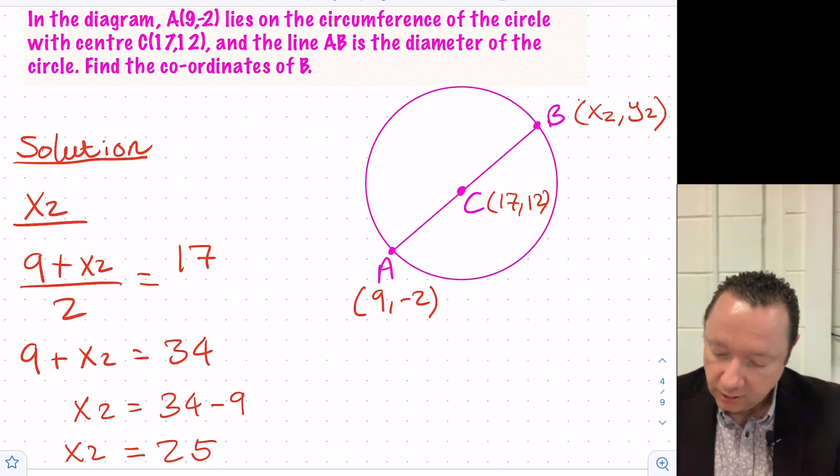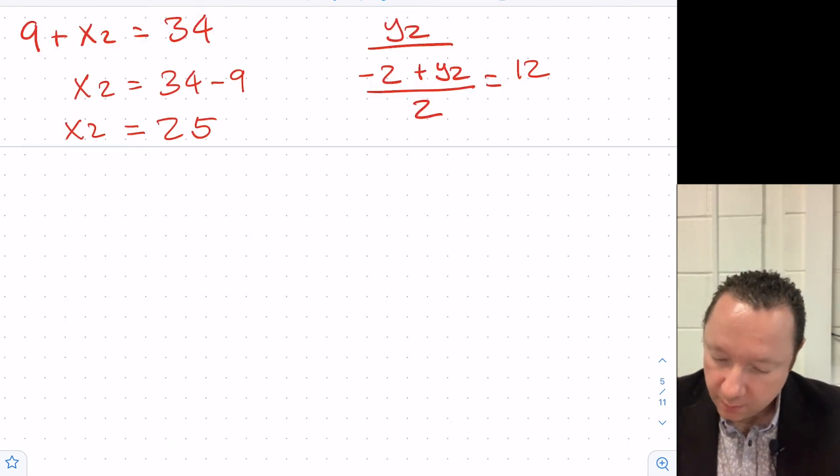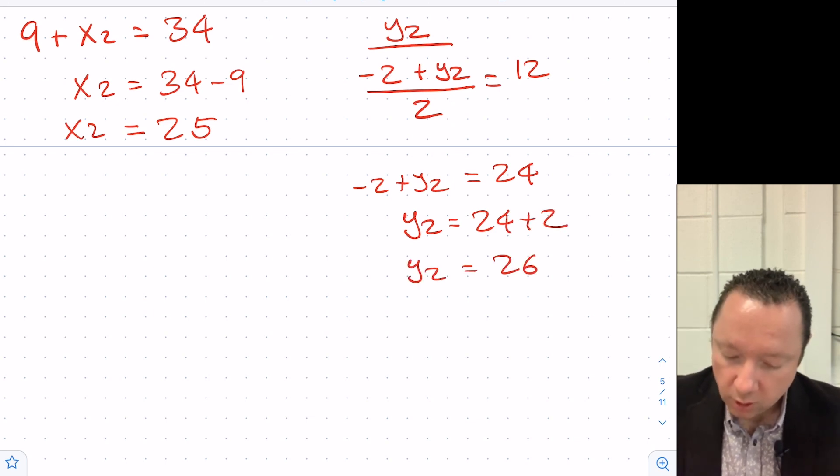Let's do the same with our y's. So to get our y2, we know that minus 2, the y-coordinate of A, plus our y2, divided by 2, must equal the y-coordinate of the middle, which is 12. 12 times 2 is 24, so we get minus 2 plus y2 equals 24. So y2 must be 24 plus 2. y2 is 26. So the coordinates of B equals 25, 26.